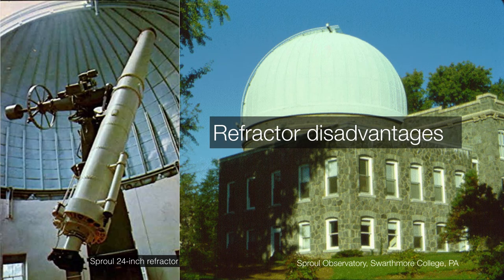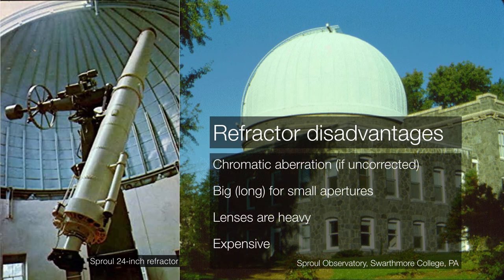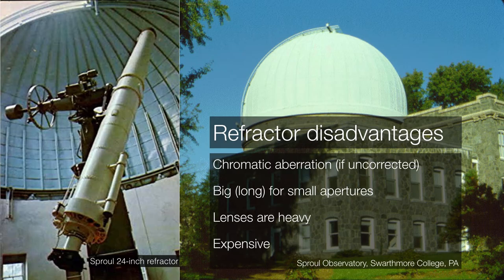So refracting telescopes have several fundamental disadvantages, not the least of which is chromatic aberration. Then you have to build them very long for modest apertures. That in turn requires very large structures in order to house them. The lenses are very heavy and they are very difficult and therefore very expensive to produce.